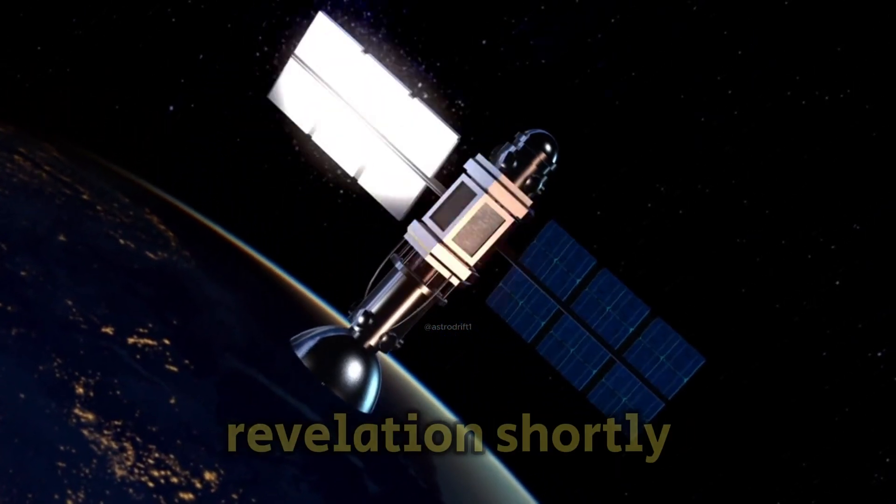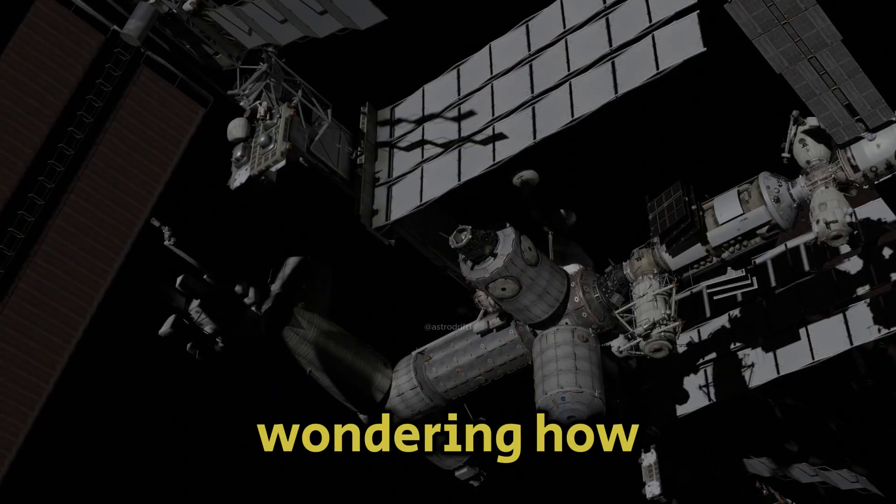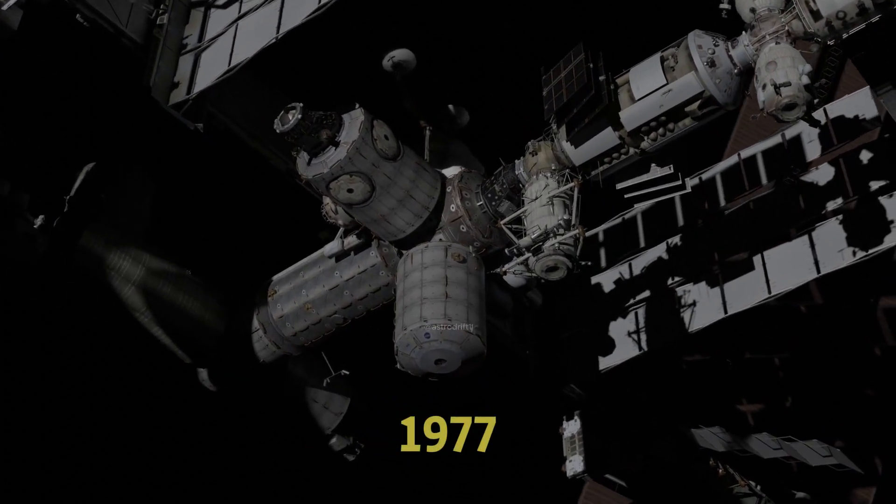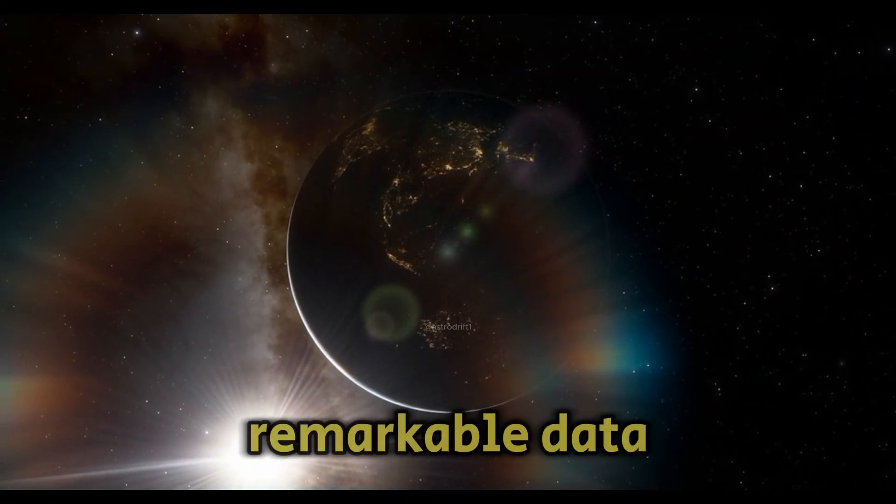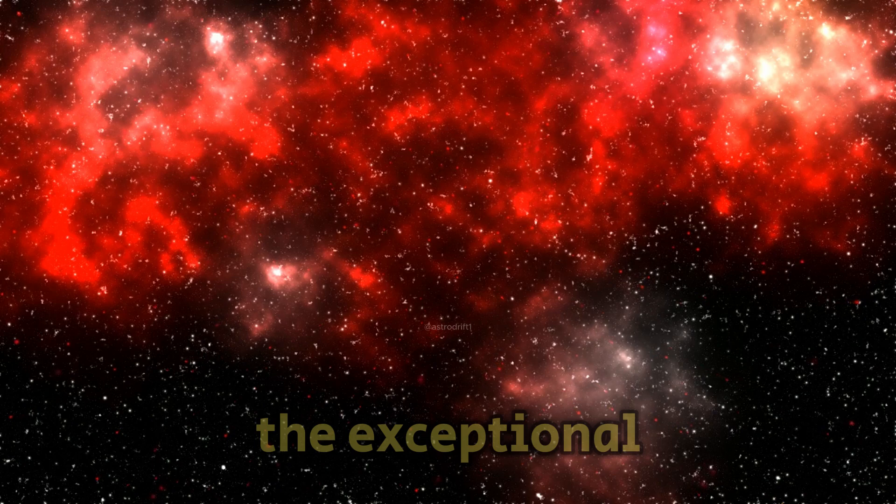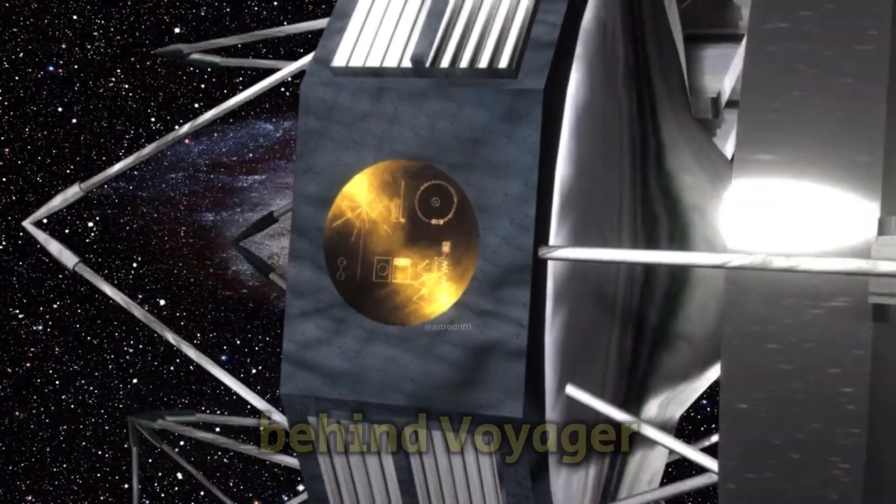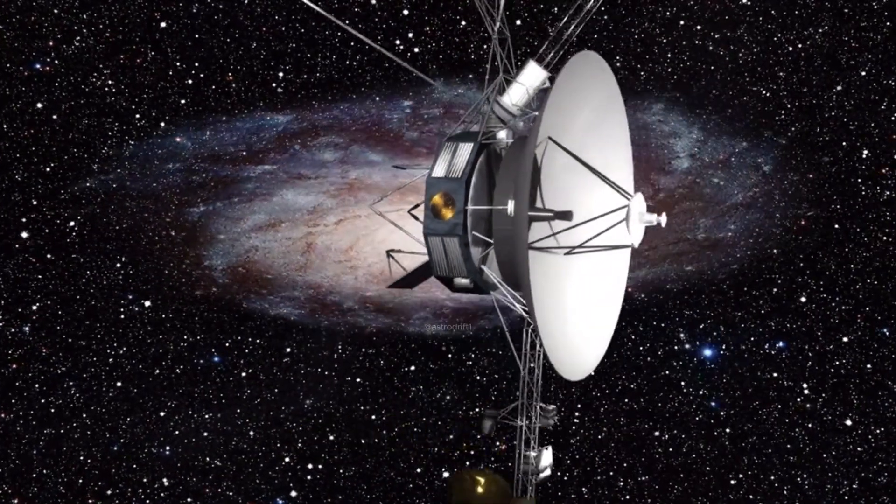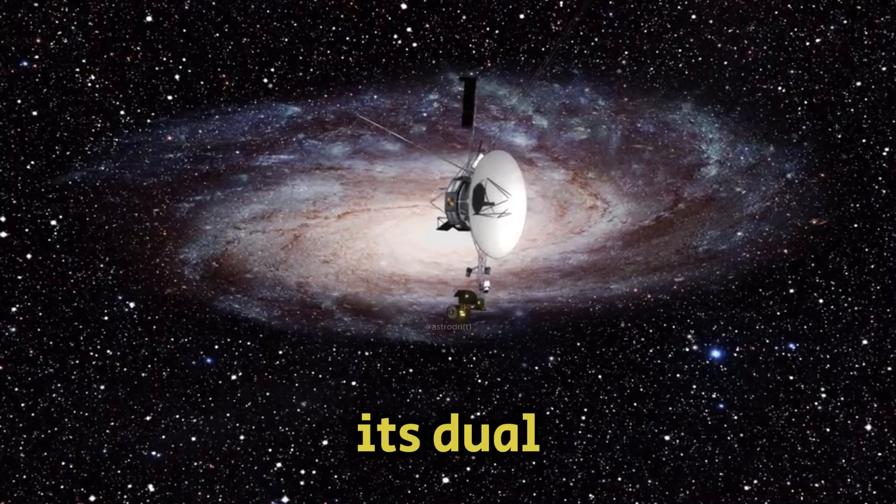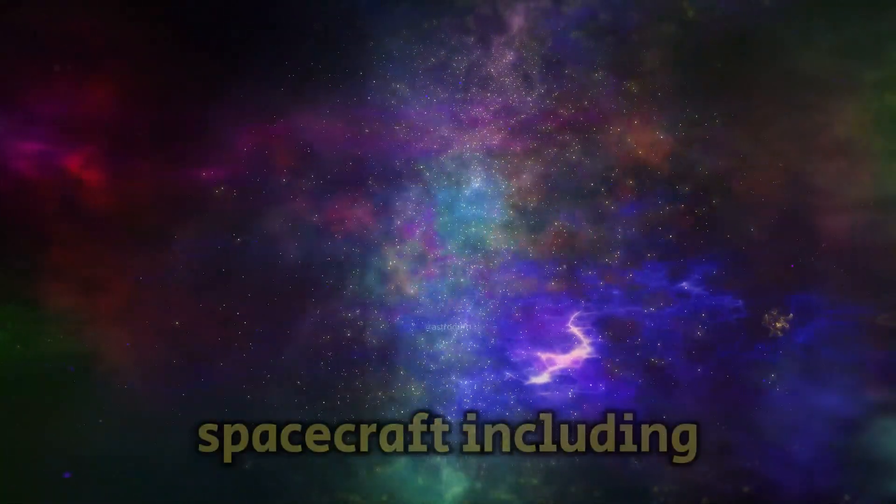We'll explore this major revelation shortly, but you might be wondering how a spacecraft launched in 1977 is still operational and delivering such remarkable data. The answer lies in the exceptional engineering and foresight behind Voyager 1's design. A key to its longevity is its dual redundant computer systems.